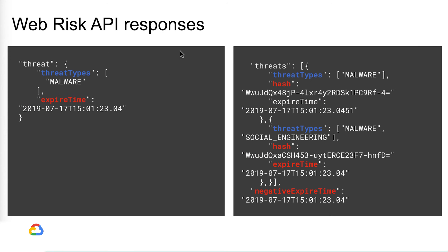If the URL is known to be unsafe, the WebRisk API will respond with the threat types and expire times. Expire time refers to the time until which a URL should be considered unsafe. Negative expire time refers to the time until which a URL should not be queried again.